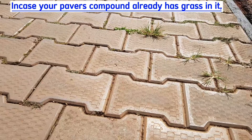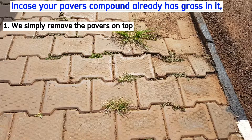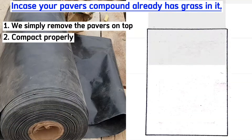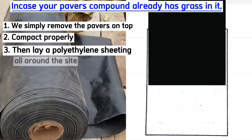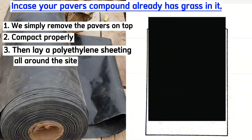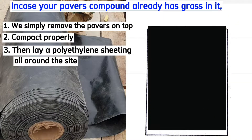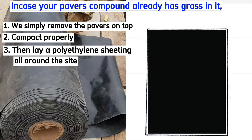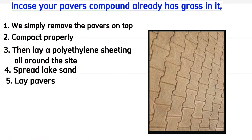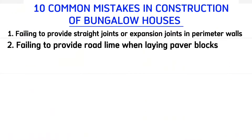When your paved compound already has grass in it, simply remove the pavers on top, compact properly, then lay a polythene sheeting all around the site or any other DPM that covers the whole area, then spread lake sand on top of the DPM and lay pavers on top.